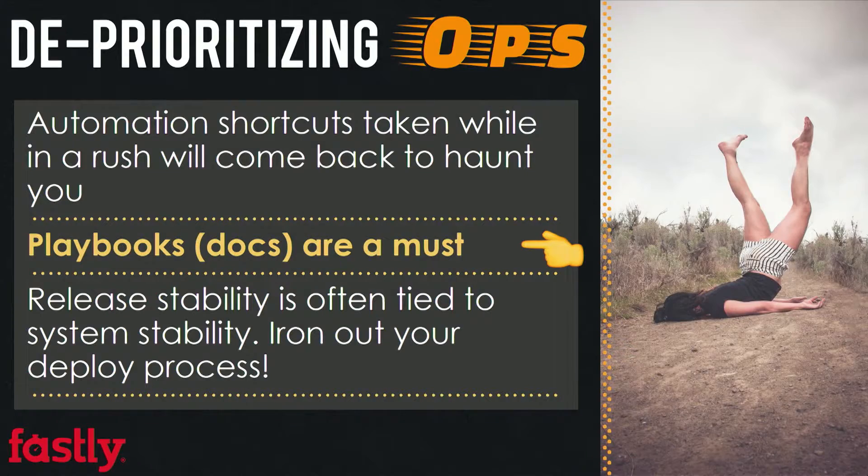Another thing that people tend to do is deprioritize operational things. Every system carries some sort of operational task associated with it, and whenever you cut corners on this, everything that you cut a corner on will eventually come and screw you over at the worst possible moment. Normally the worst possible moment is in the middle of an incident, when you realize that somebody did something that is either not documented or not part of your infrastructure as code, and you have to solve it on the spot.